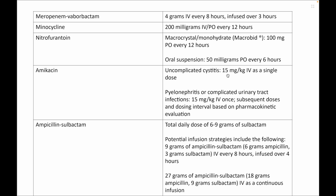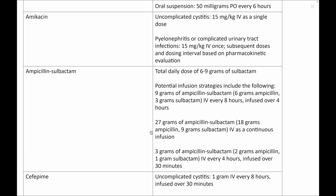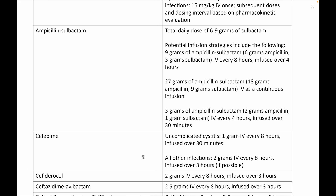Amikacin: for both uncomplicated and pyelonephritis, give 15 mg/kg. Ampicillin-sulbactam: the daily sulbactam dose must be at least 6 to 9 grams. One option is 9 grams of ampicillin-sulbactam every 8 hours infused over 4 hours. Alternatively, 27 grams of ampicillin-sulbactam IV as a continuous infusion. Or 3 grams (2 g ampicillin + 1 g sulbactam) every 4 hours infused over 30 minutes.